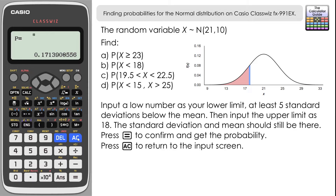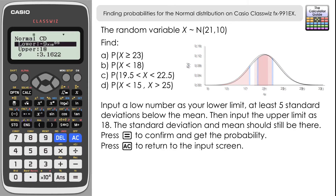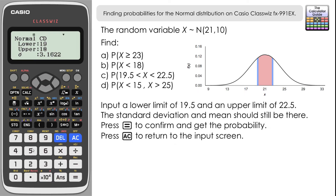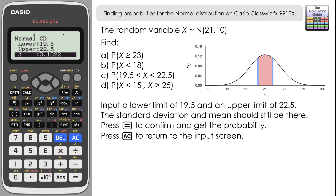For part c, press AC to go back to the data input screen. This time we have both a lower and an upper limit given to us: lower is 19.5, upper is 22.5. That's the region of the graph we're looking for — the probability of being in that region. Standard deviation and mean are the same, so just press equals to confirm. The probability is 0.3647 to four decimal places.